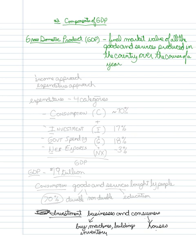There are generally two approaches to calculating it: an income approach and an expenditure approach. Basically two ways you could find out how much the economy is producing — you could either count up all the money that people are receiving for doing things in the economy, or you could count up how much people are spending in the economy over a year. And theoretically the two should equal each other, because how could people spend money that they don't have?